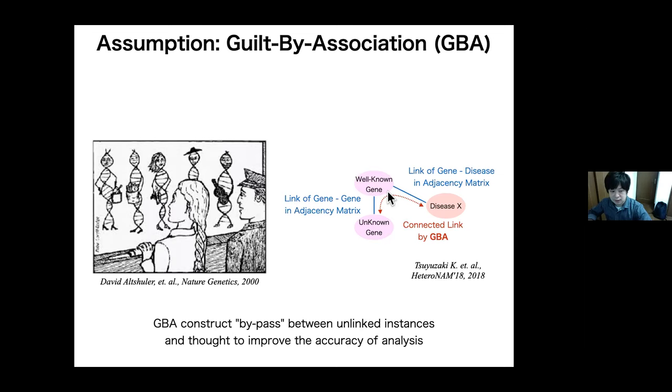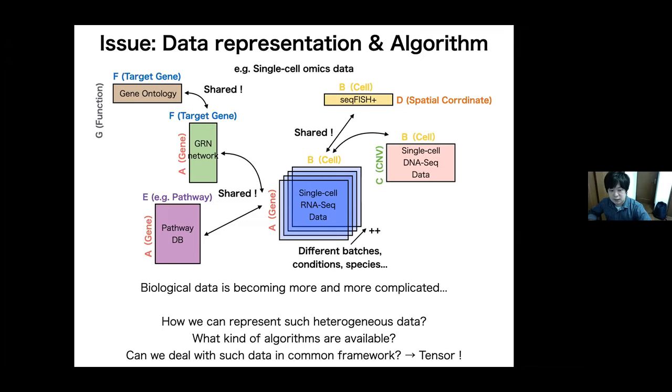With the development of experimental technologies, biological data are becoming more and more complicated. However, the issue is that it is not obvious how to represent and analyze such heterogeneous biological data. For example, in single-cell omics data, annotation to genes and other omics data about cells and cellular metadata are available. But for such analysis, although individual analysis methods have been proposed, there is no common framework to deal with such complex datasets. And here, I will introduce a mathematical framework called tensor, which can be considered as a candidate of common framework.